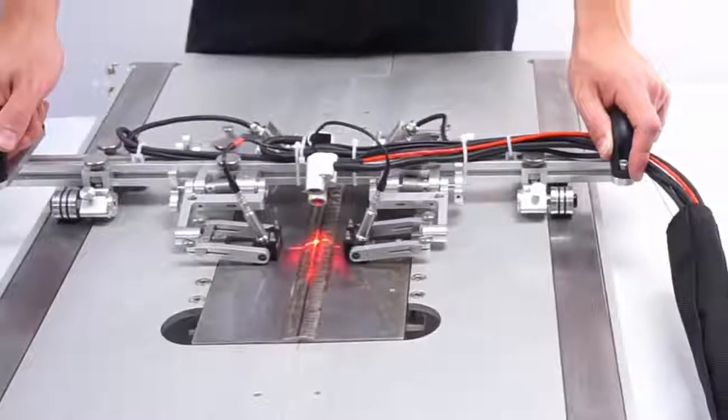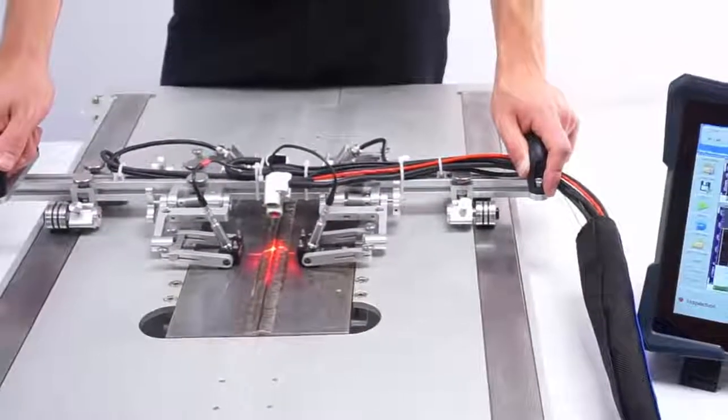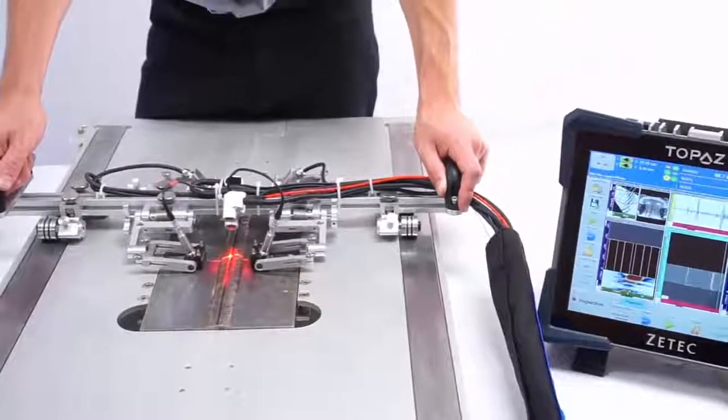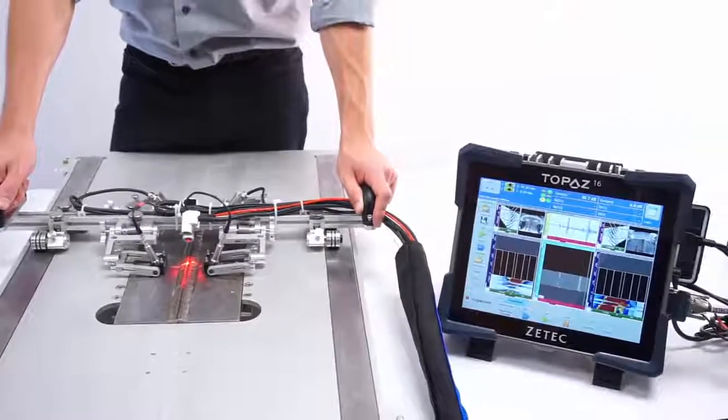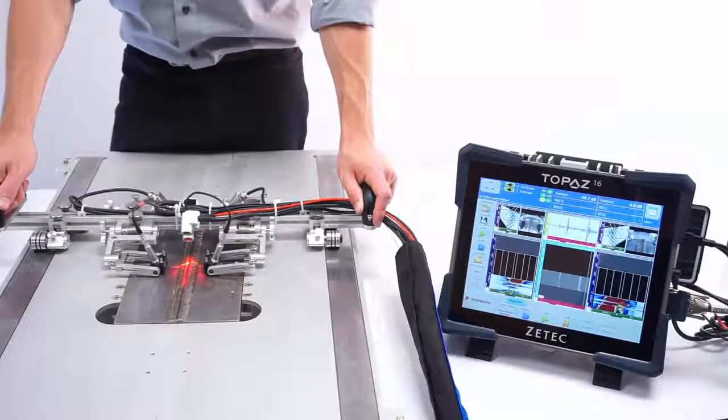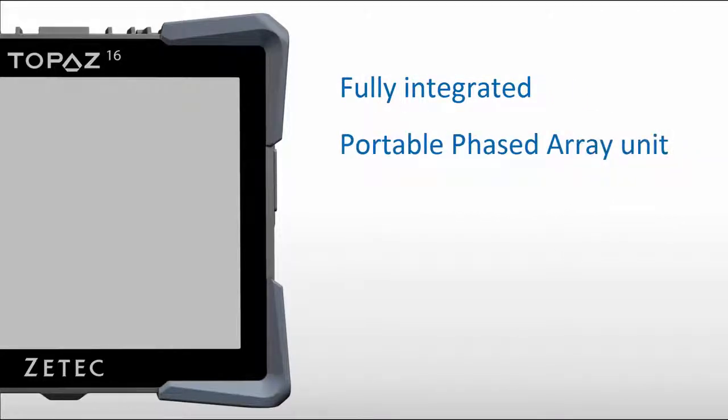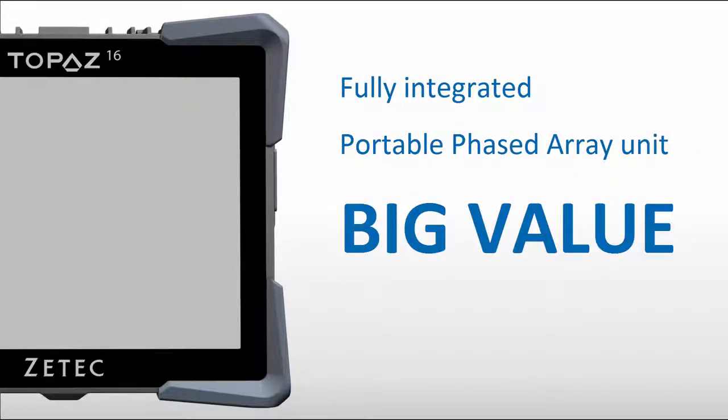These complementary techniques result in a high probability of detection for a wide range of welding defects and in excellent sizing capabilities for critical planar flaws. Topaz 16 is a fully integrated portable phased array unit that delivers big value in a small size.